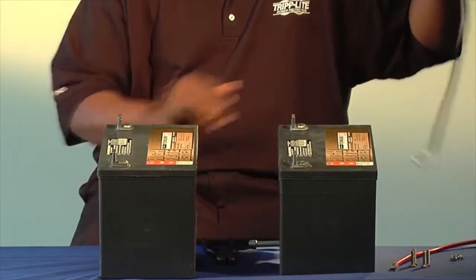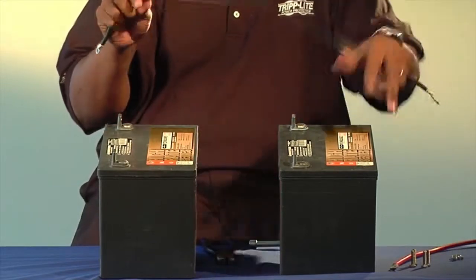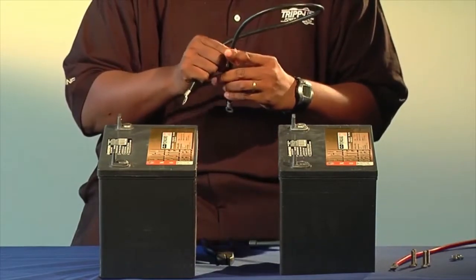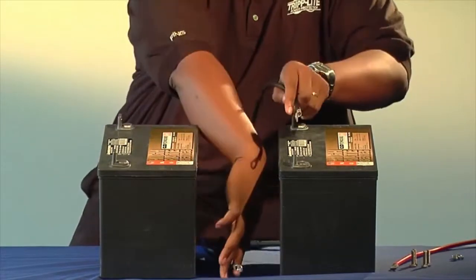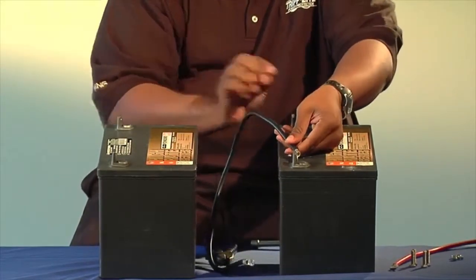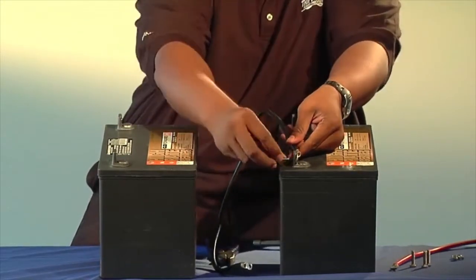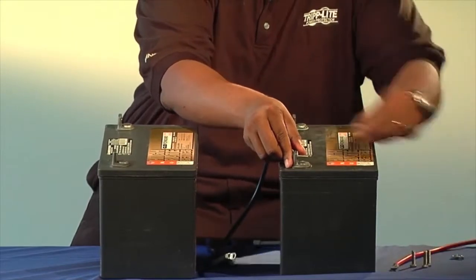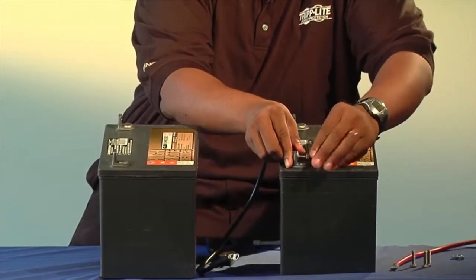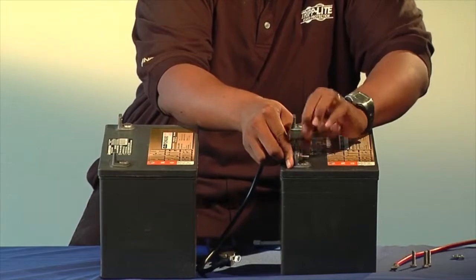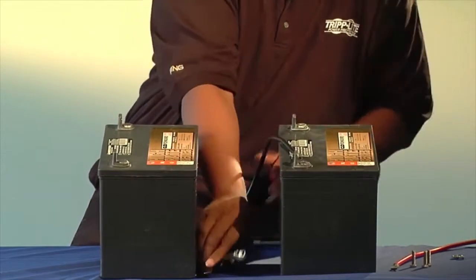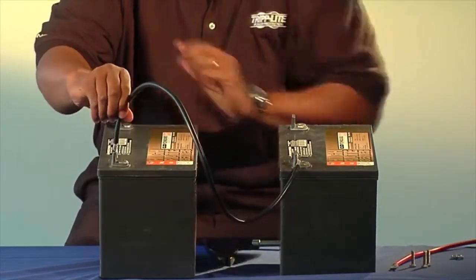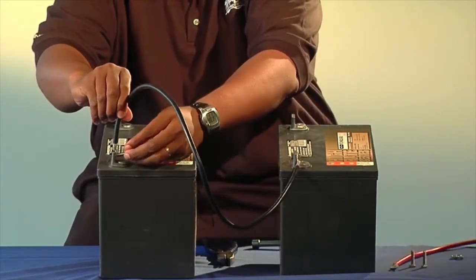First, we're going to connect the cable from battery 1 to the second battery. We're going to connect it to the negative side first. You take the terminals of the negative, which is marked by the minus sign, and you connect it to battery 1. Then you take the other terminal of battery 2 and you connect its minus sign, or the negative side.